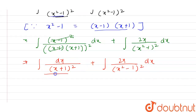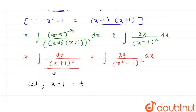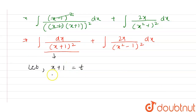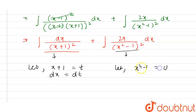For the first part, let x + 1 = t, so differentiating both sides gives dx = dt. For the second part, let x² - 1 = u, so differentiating both sides gives 2x dx = du.